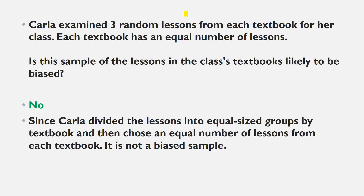In this example, suppose Carla examined three random lessons from each textbook for her class. Each textbook has an equal number of lessons — she picks three lessons from physics, three from chemistry, three from maths. Suppose each book has 10 lessons and she examined three from each. Is this sample of lessons likely to be biased? The answer is no, this is not biased.